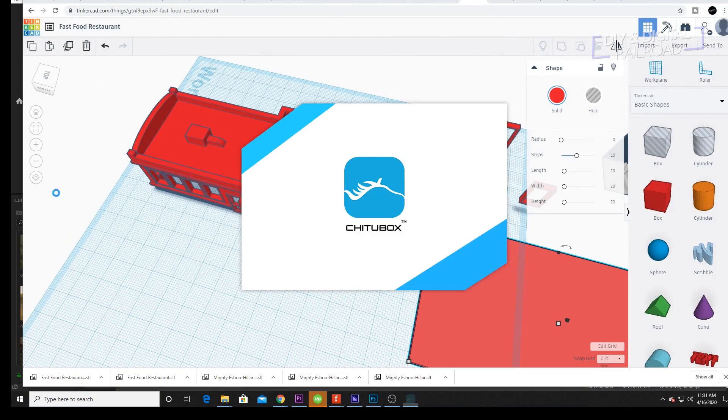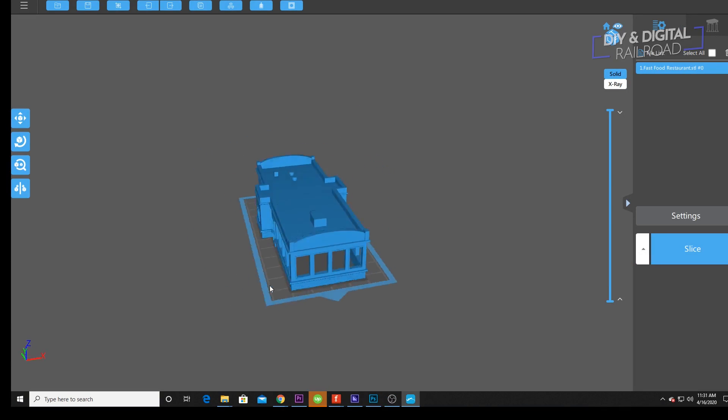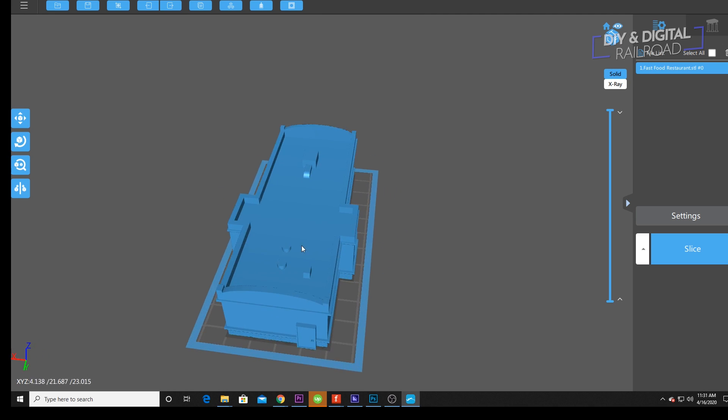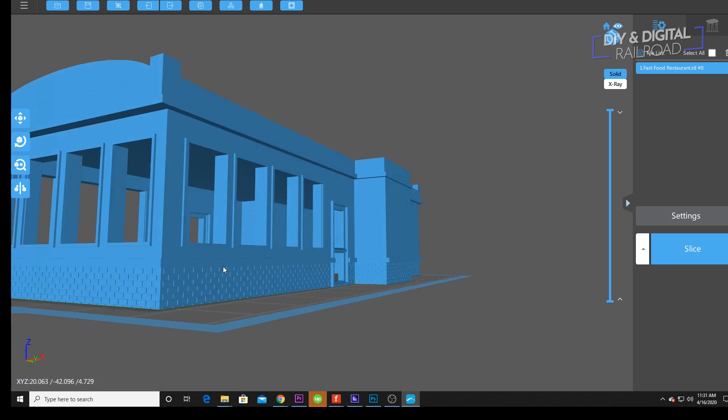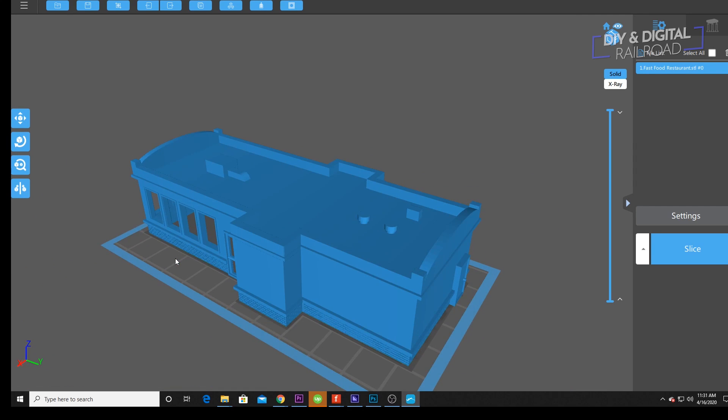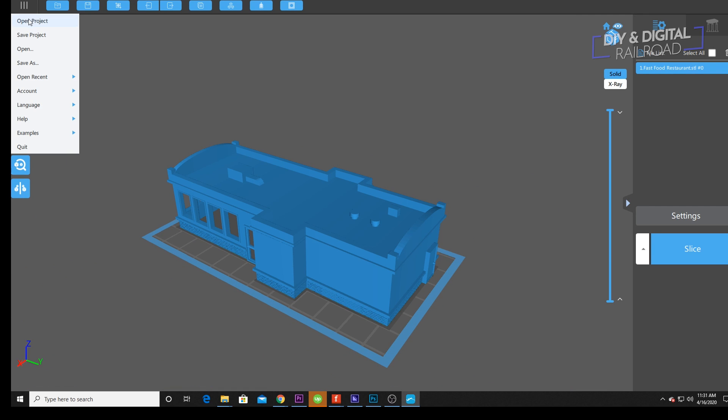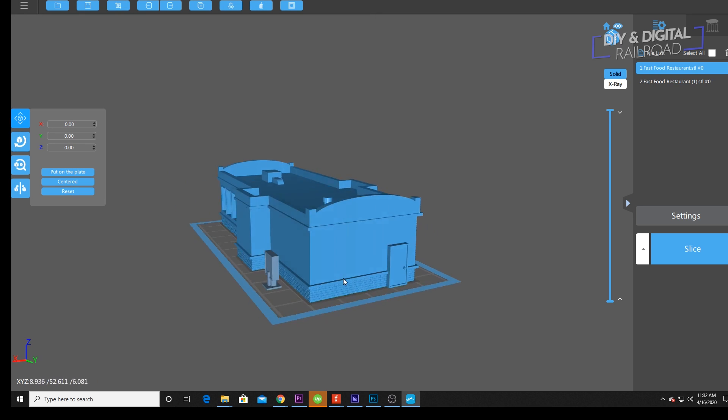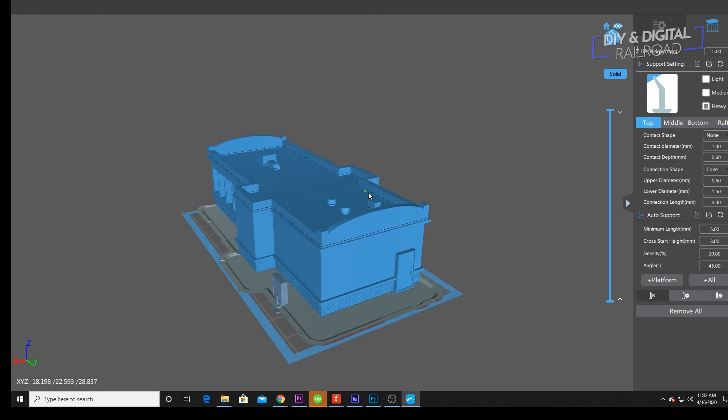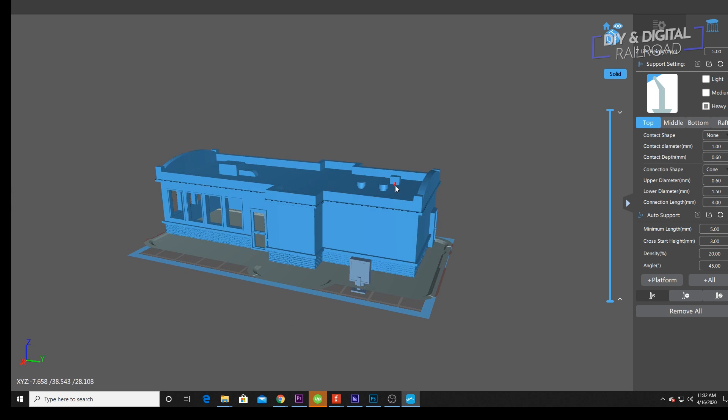I then load it into my slicer. In this case, I'm using ChittuBox, which is a free slicer that works really well for the Anycubic Photon, but it also works for the Elegoo Mars and other printers as well. I then add both of the models to the print base and work on my settings for supports of any kind. And then I go to start slicing.